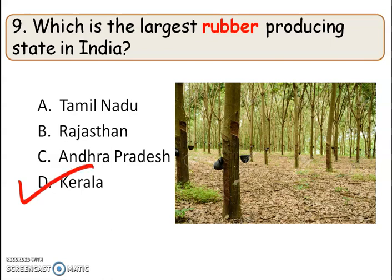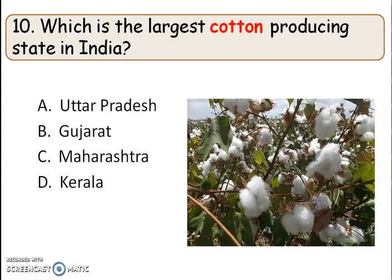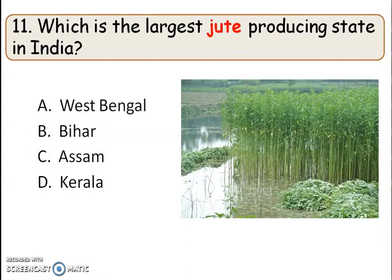Which is the largest cotton producing state in India? The right answer is option B, Gujarat. Next question: which is the largest jute producing state in India? The right answer is option A, West Bengal. West Bengal is the largest producer of jute in India.